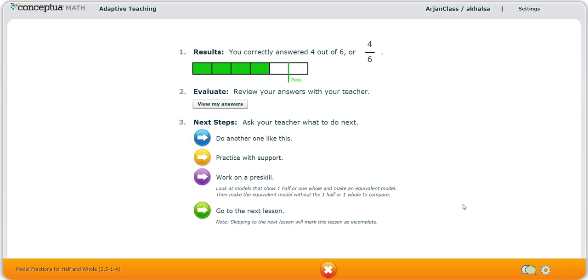Or perhaps the teacher's going to recommend that they do the yellow lesson to practice with support. We call it the R or remedial lesson. In this case, if there are videos in the original lesson, there'll be more videos. If there are models moving to procedures, there'll be more models in the slower trajectory toward going to the procedures.